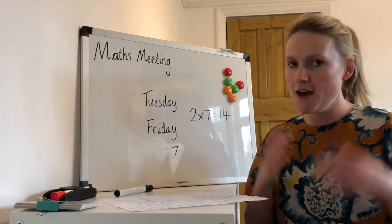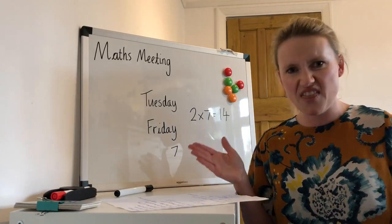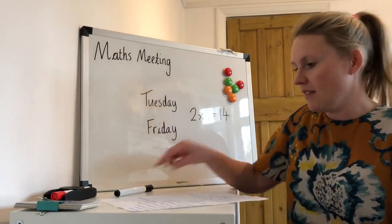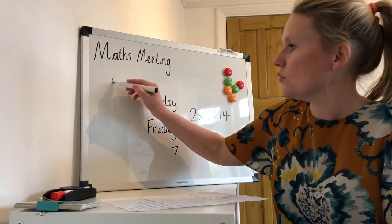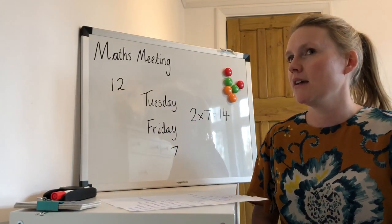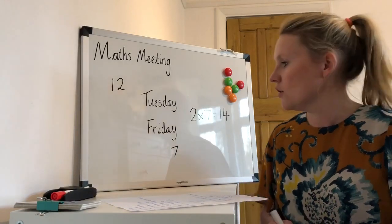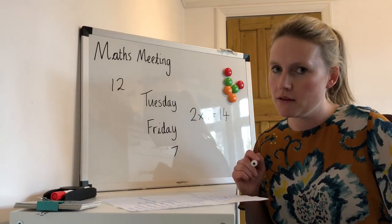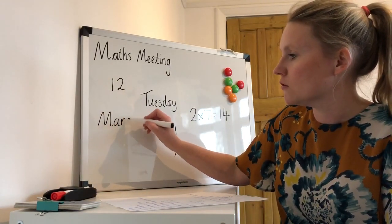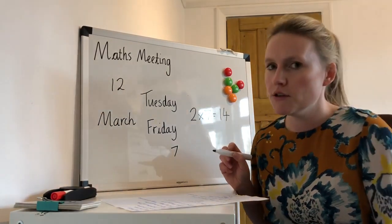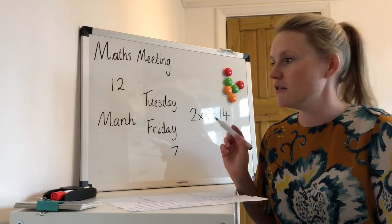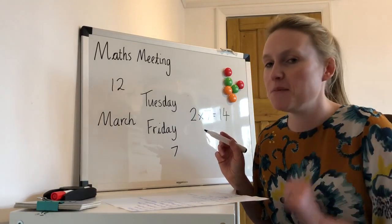So how many months are there in the year? There are 12 months in the year. Let's think of a tricky question: which month comes before March? You might need to sing the song. January, February, March — so which one came before March? February.